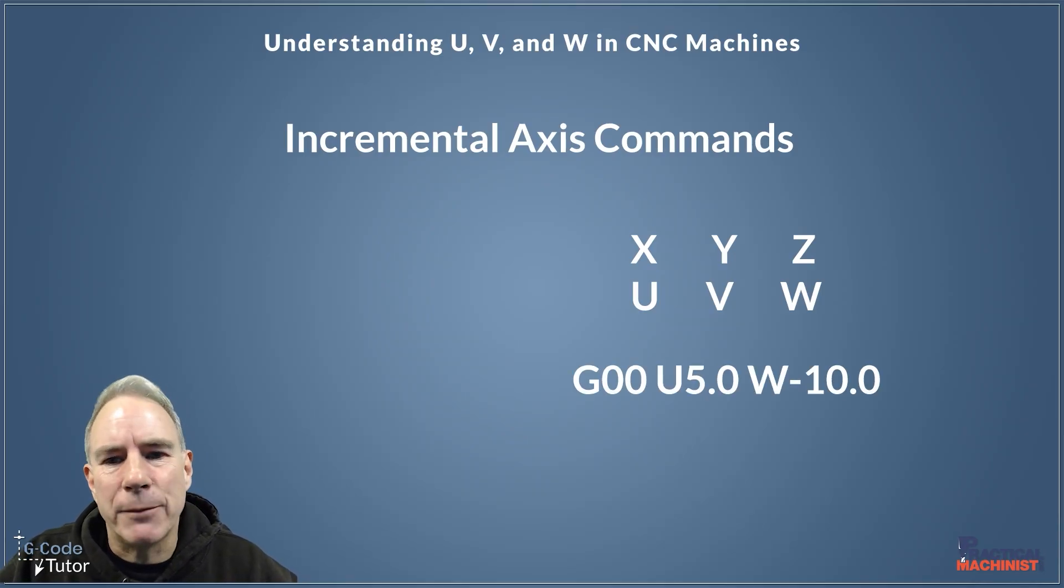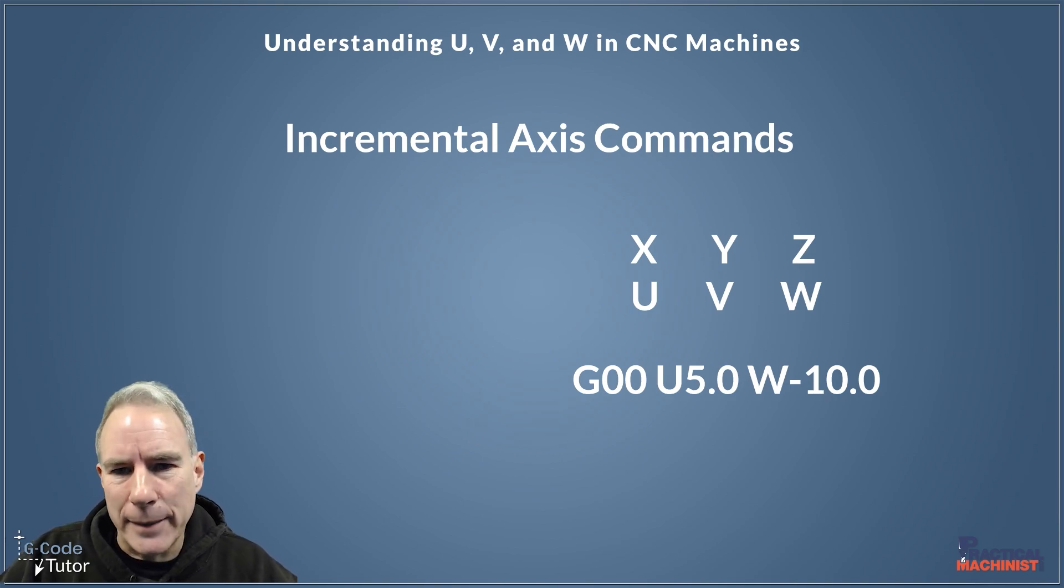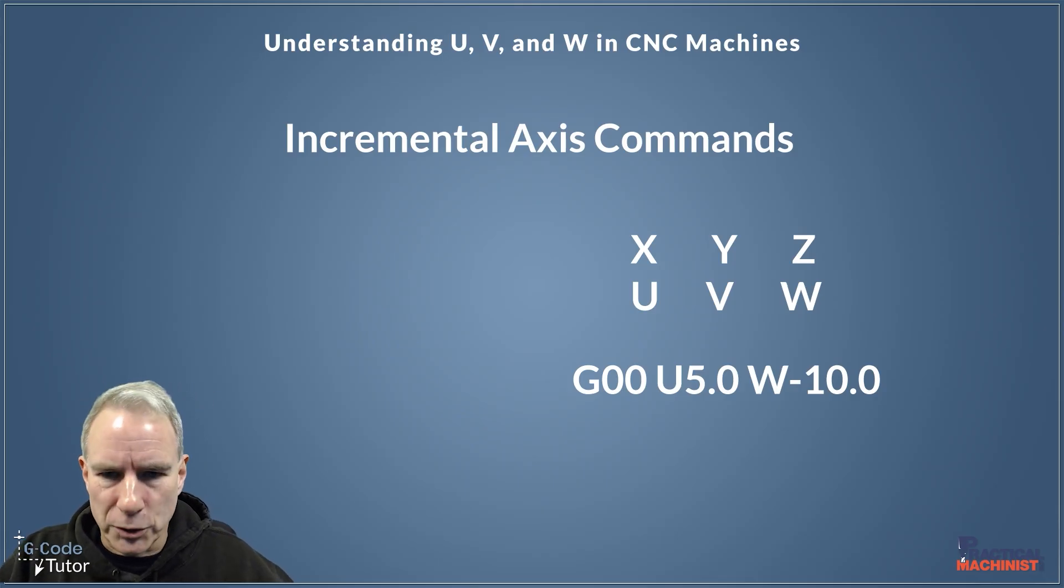So if we take, for example, a rapid move on a CNC lathe, we've got our G00 there, our rapid travel command. Our U is our X. So what we're doing is we're moving plus in X five millimeters and our W there is Z. So we're moving 10 millimeters to the left or towards the chuck if we're on a lathe by 10 millimeters from the last known position of the tool.